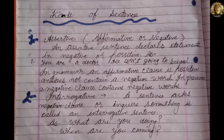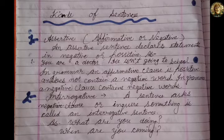The first kind of sentence is assertive. In assertive sentences there are affirmative or negative. An assertive sentence declares a statement in negative or positive. For example, 'You are a doctor' — this is positive assertive. 'He is not going to school' — this is negative. In grammar, an affirmative clause is positive and does not contain a negative word.